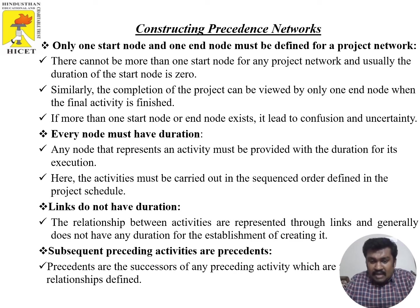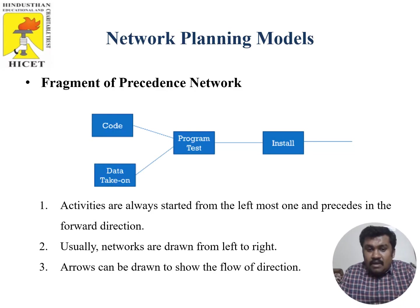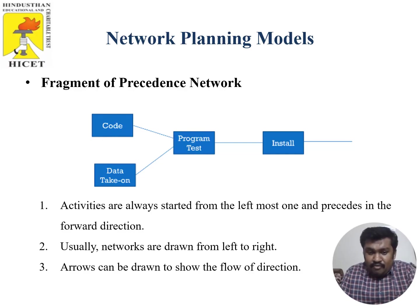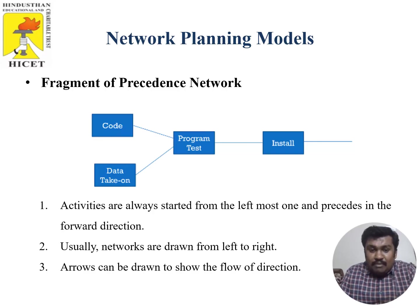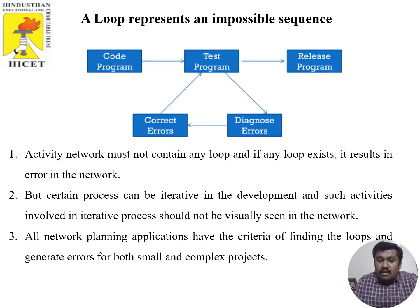Subsequent preceding activities define precedence relationships. In a precedence network fragment, activities always start from the leftmost node and proceed in the forward direction. Networks are drawn from left to right, and arrows show the flow of direction. The loop represents an impossible sequence — if any loop exists in an activity network, it results in an error.